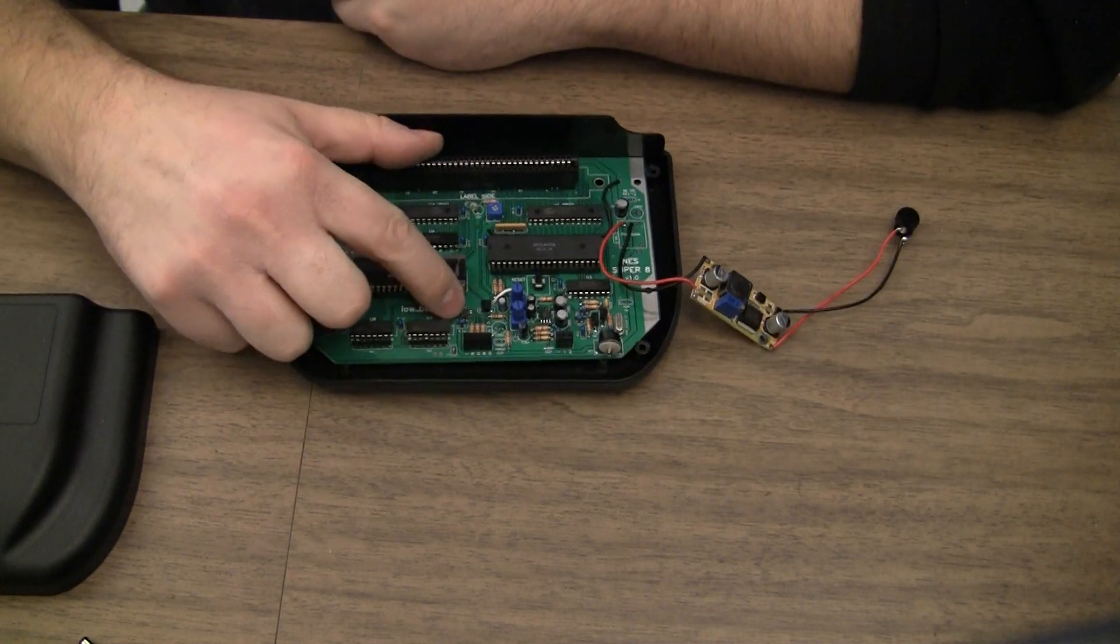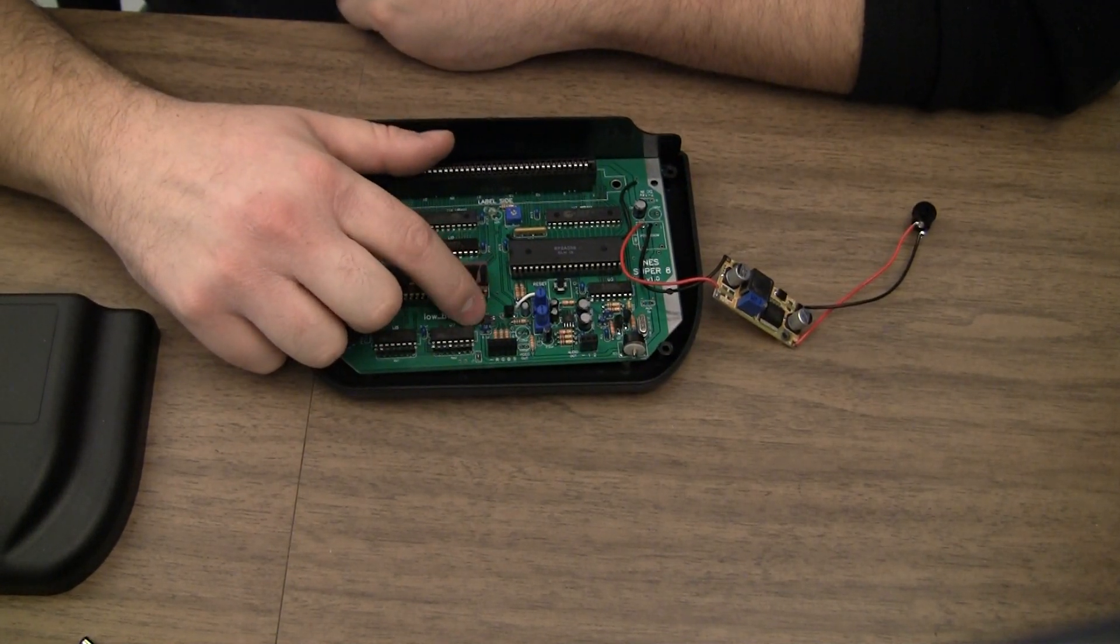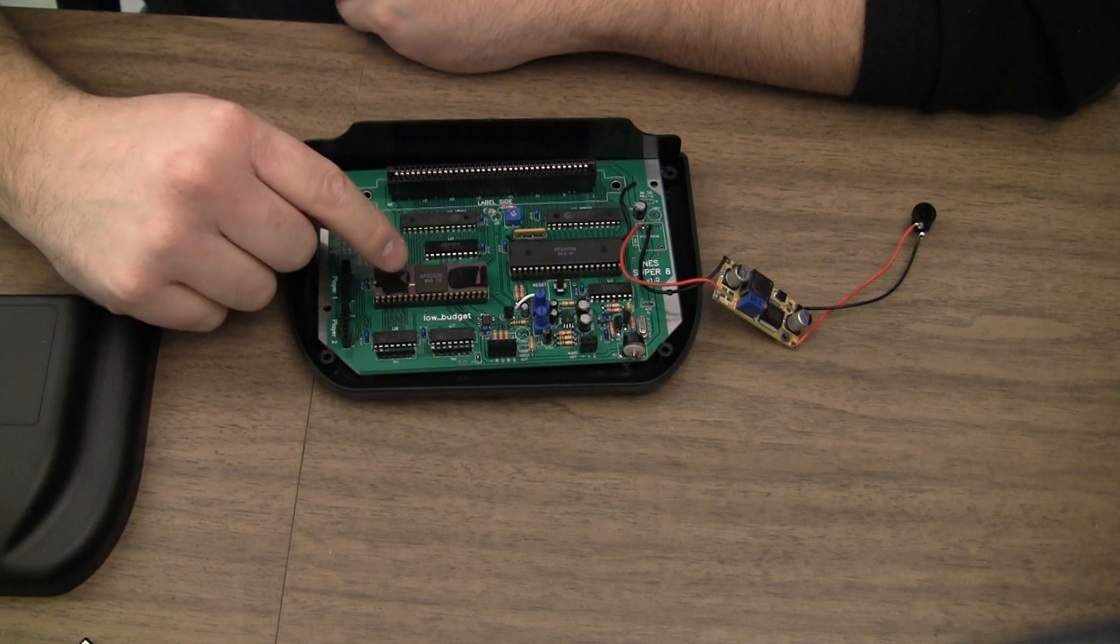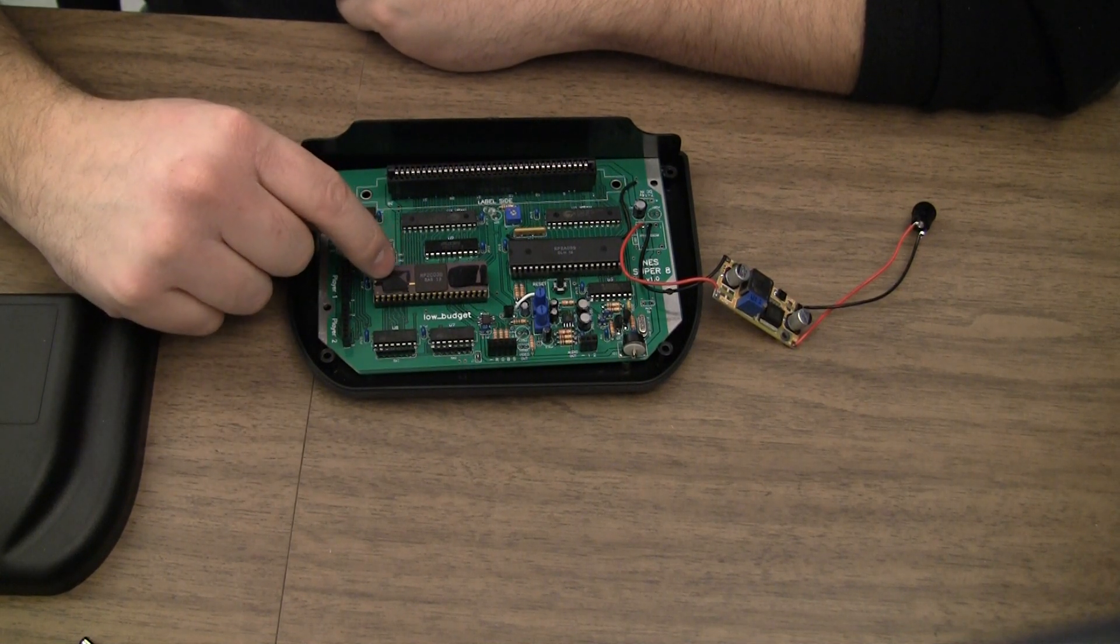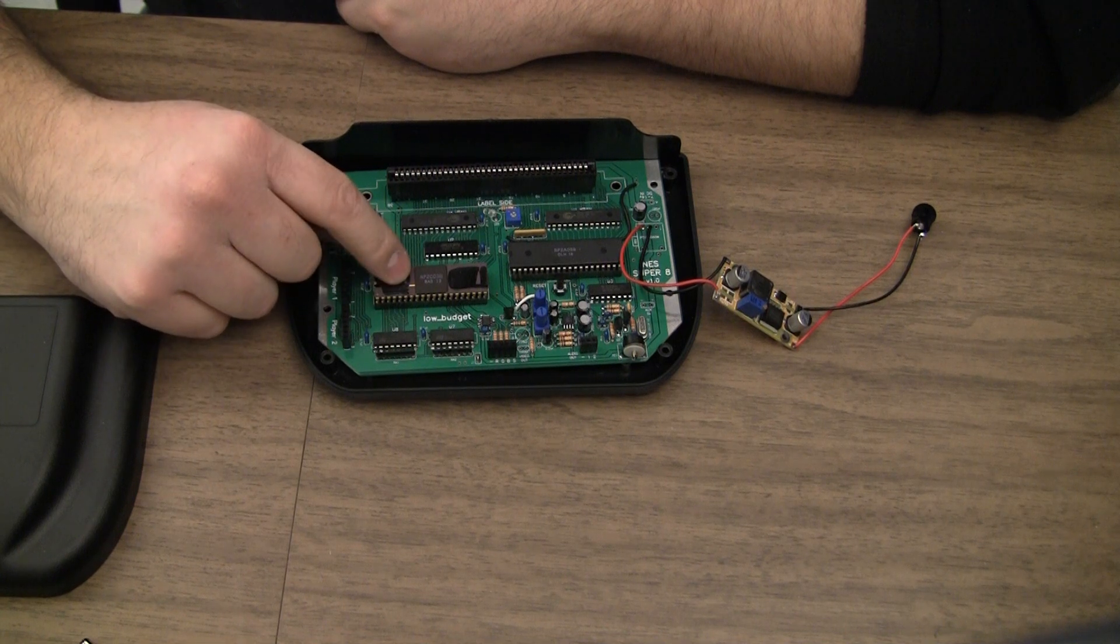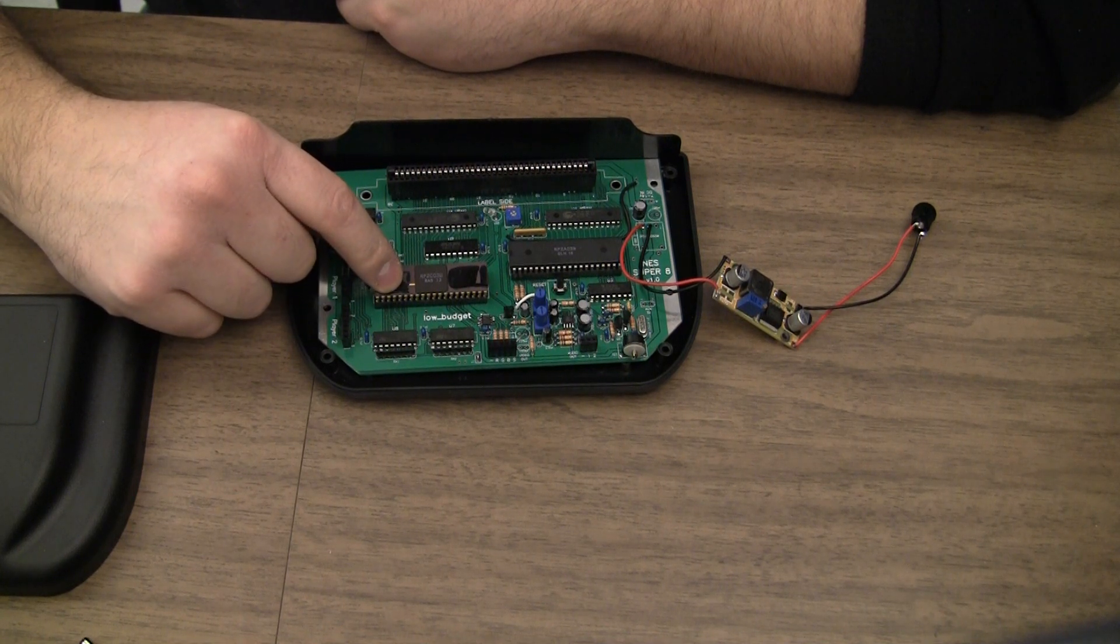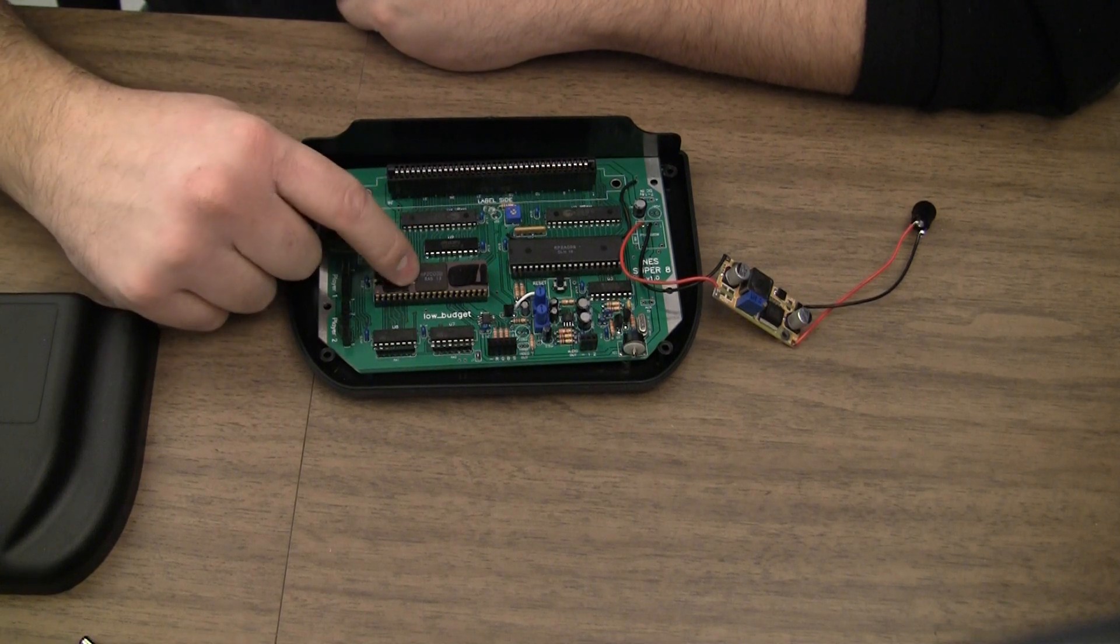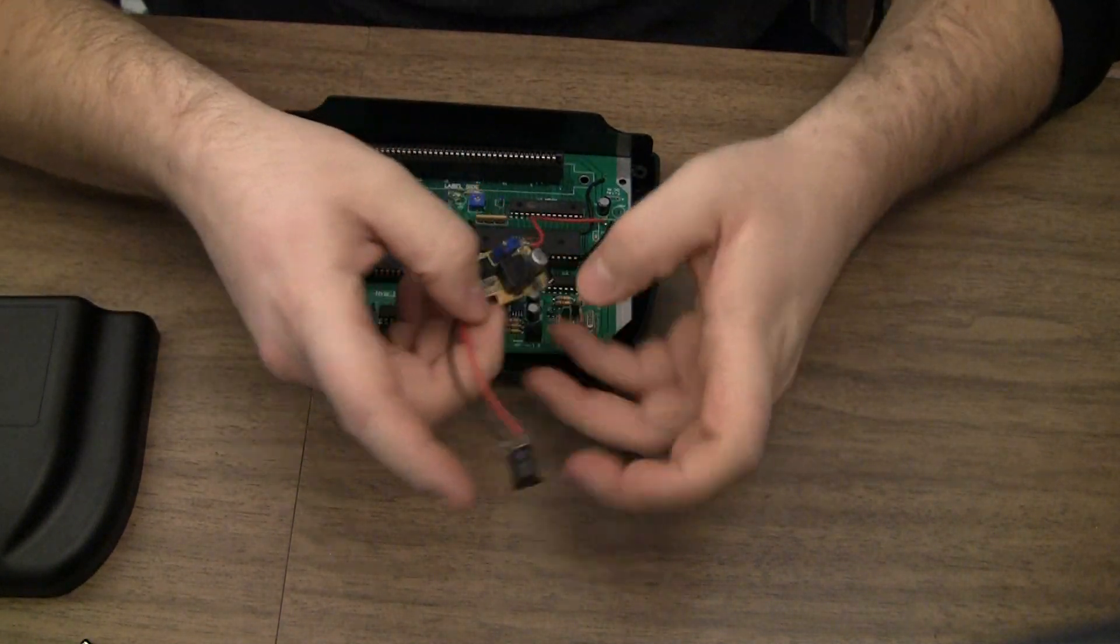I need to figure out if I'm going to use the onboard RGB amp, which seems like a good idea, or if I'm just going to plug in the component board that I've been using into the socket for the RGB PPU. That would take a lot less time for me.